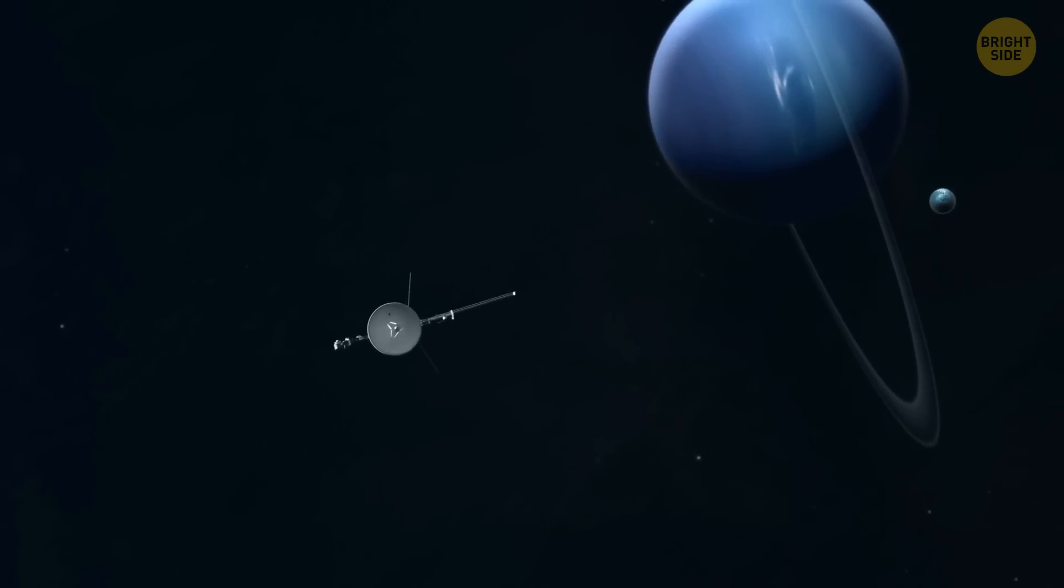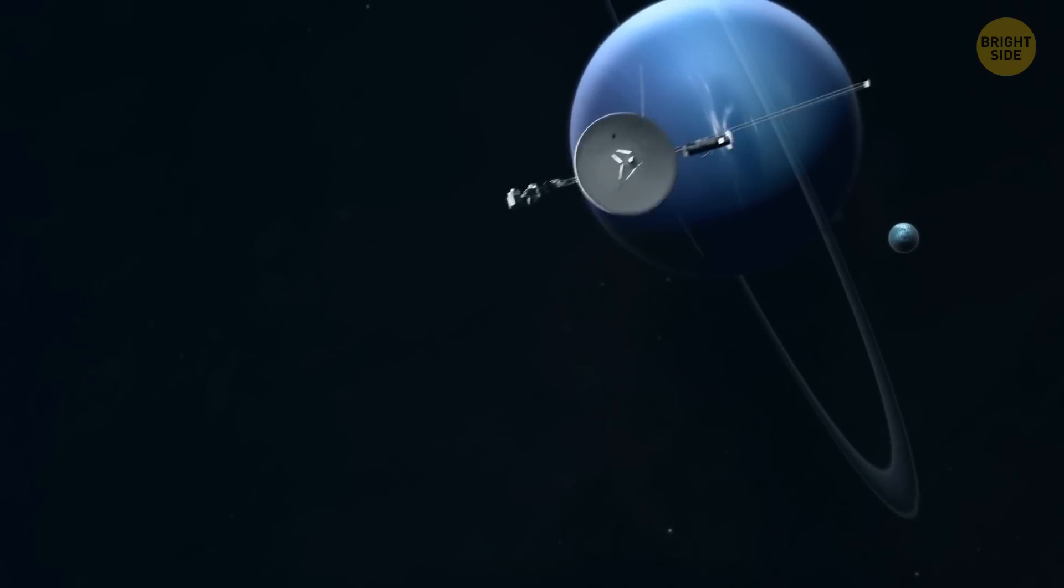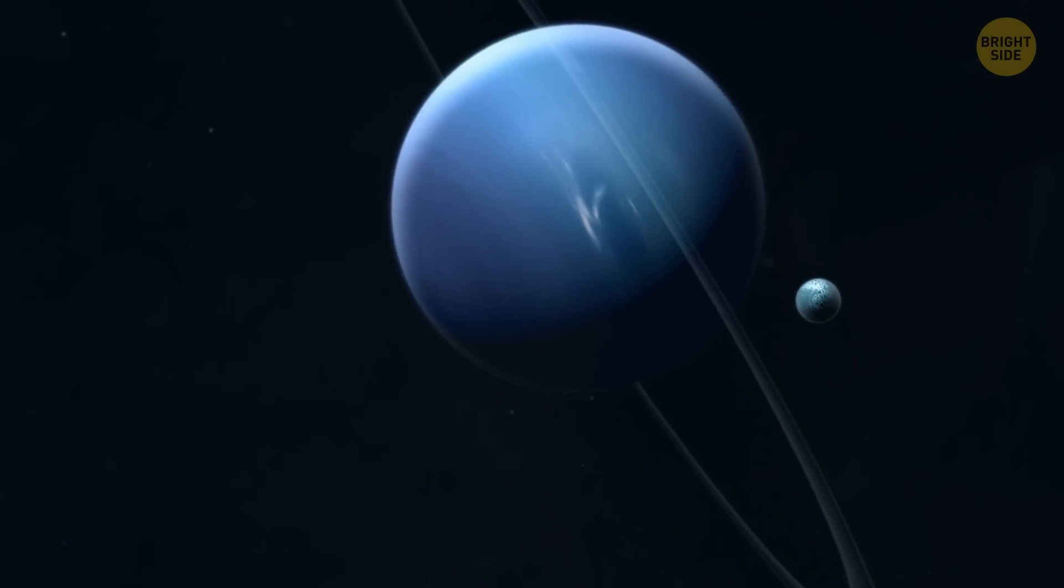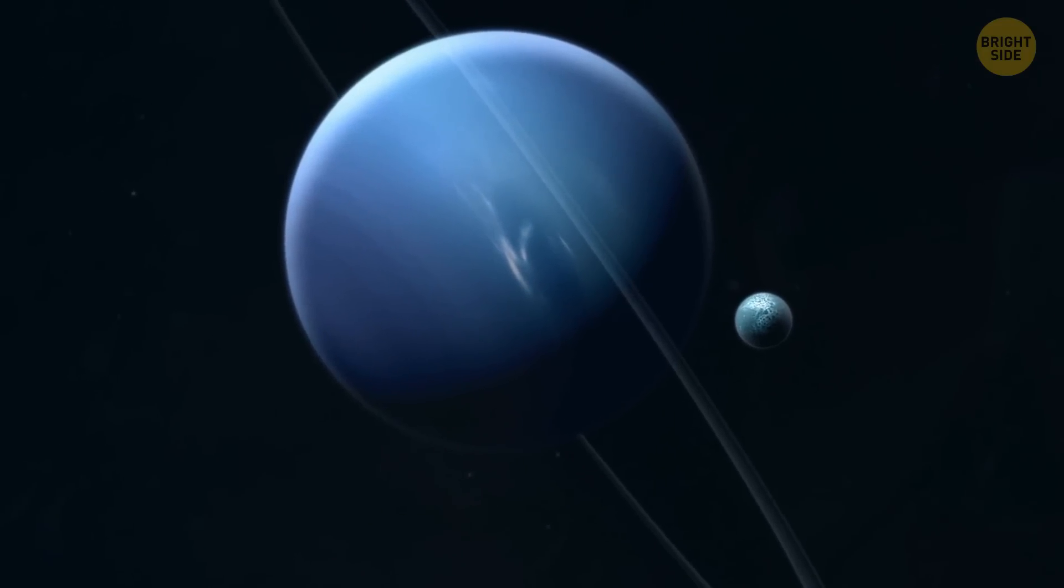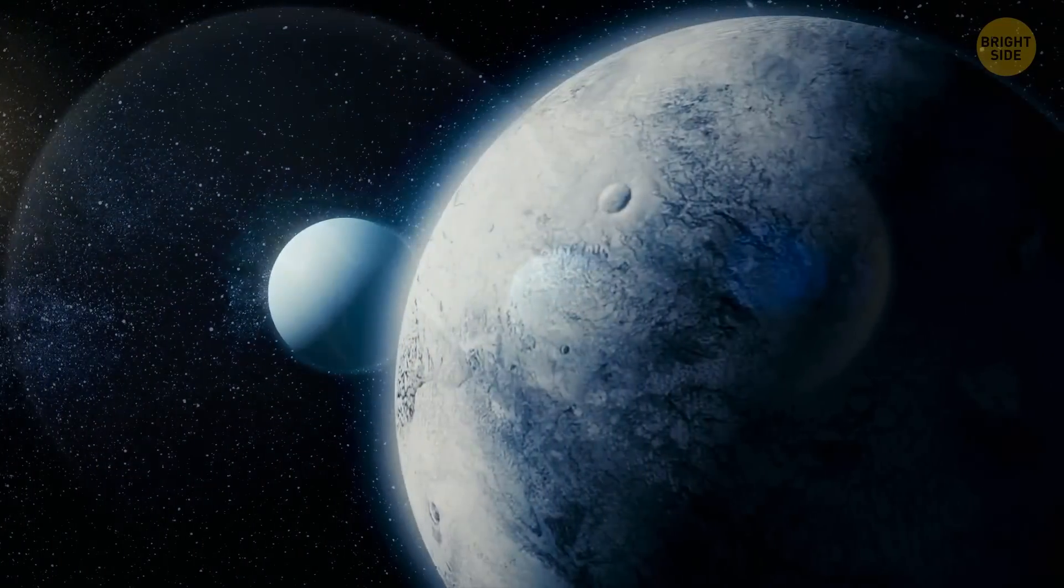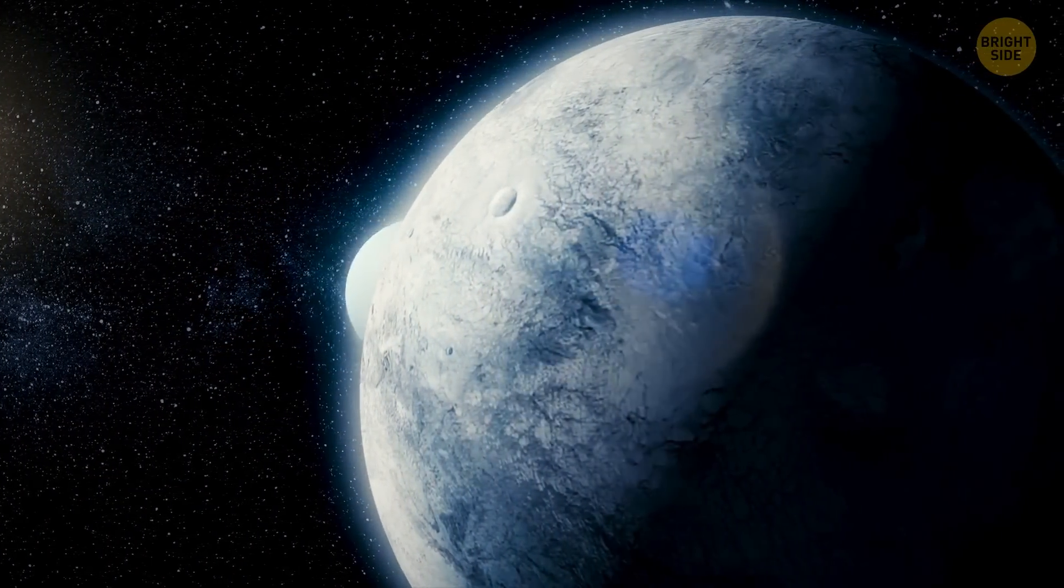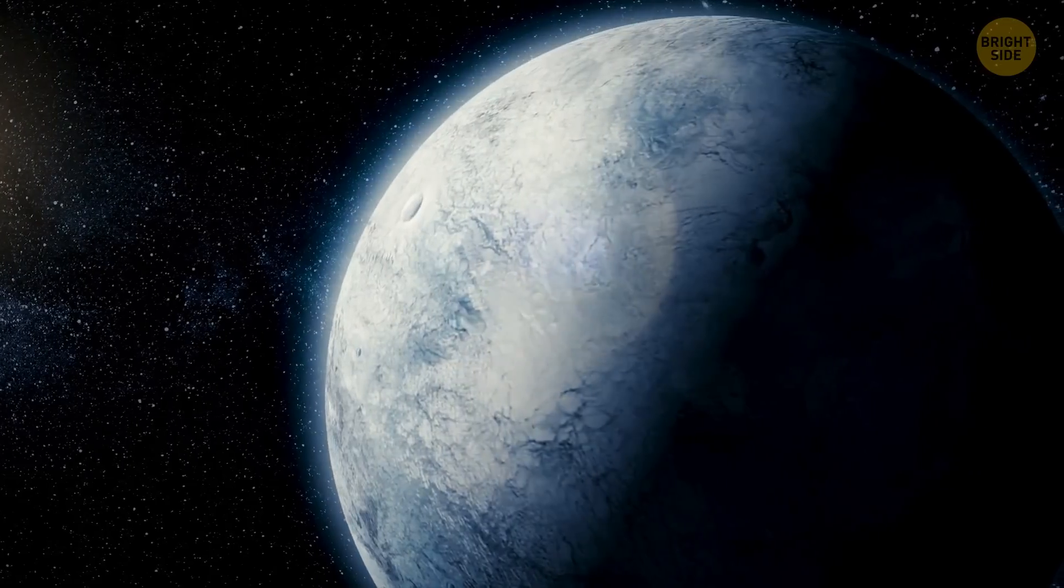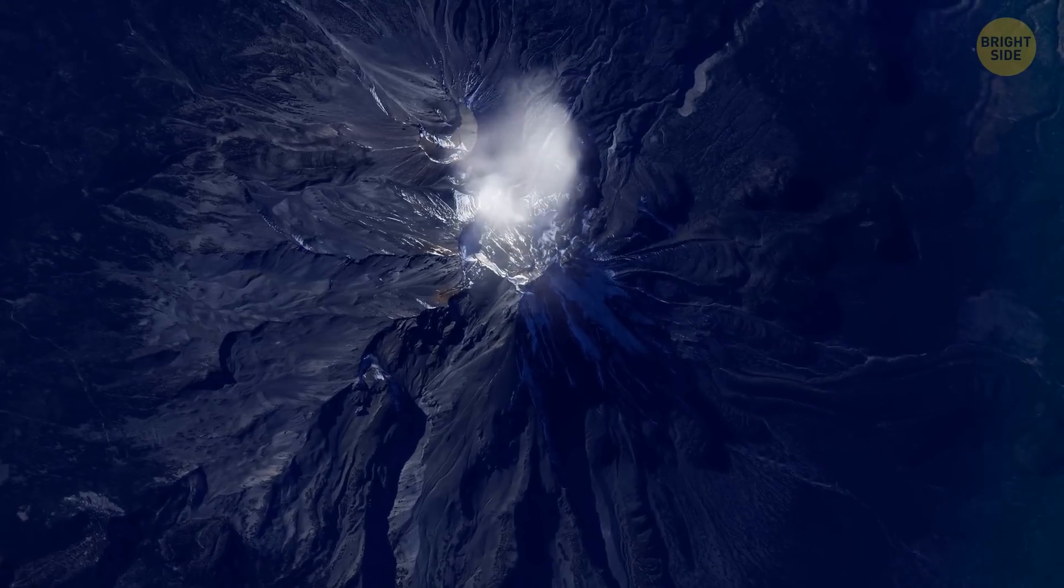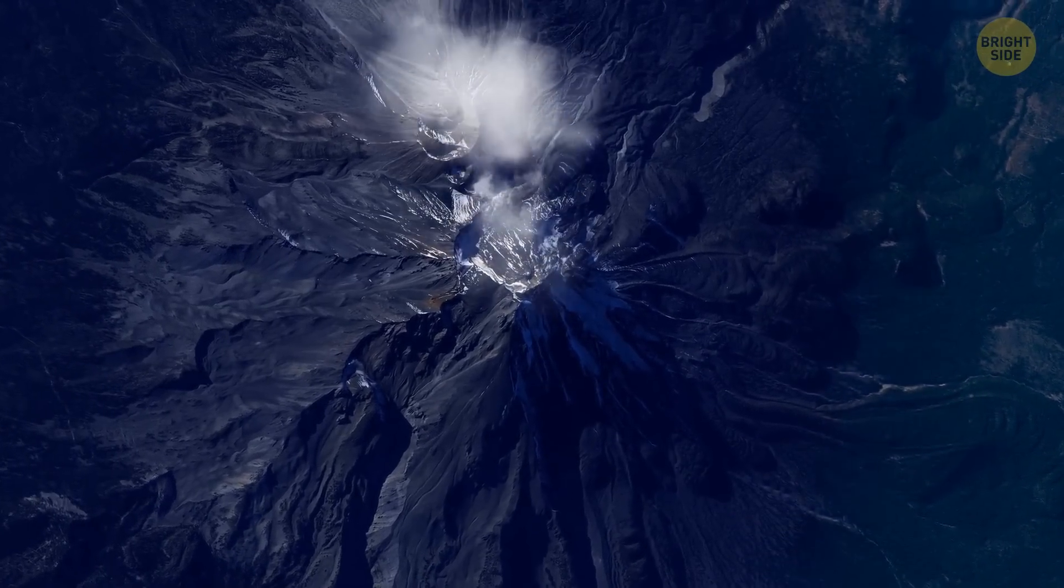But Saturn isn't the only lucky one. Triton is Neptune's biggest moon. And you guessed it, it's another life candidate. It's an icy world with frozen nitrogen all over its surface and a crust made of water ice. Again, super chilly. However, Triton is a hotspot for geologists, because it's one of just five moons in our solar system that likes to show off with its active geysers.